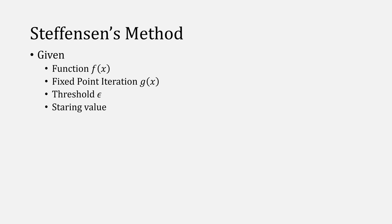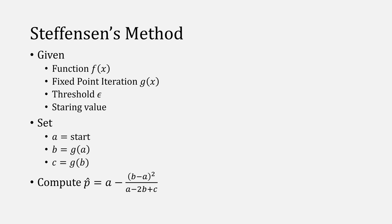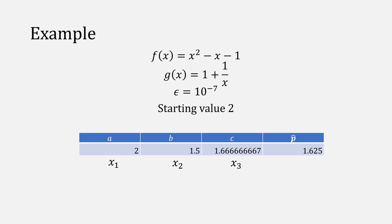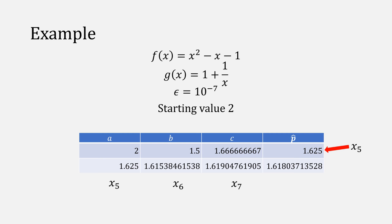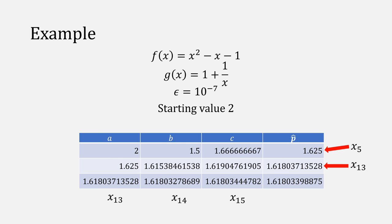Stephenson's method says that given a function and a fixed point iteration version of that function, with an error threshold and a starting value, we set A equal to the starting value, and then B and C are two consecutive values of fixed point iteration. Then we compute p-hat given our Aitken's formula, and repeat the process with A equal to p-hat until f of p-hat is less than some epsilon in absolute value. In our example, we started with the value of two, did two iterations of fixed point iteration, and computed p-hat as 1.625, which was the value of x5. With Stephenson's method, we restart using x5, do two more iterations of fixed point iteration, and compute a new p-hat — this time the value of x13. Then we restart again using x13, do two more iterations, and plug into Aitken's delta squared method, giving us the value of x27, where we meet our threshold and stop.